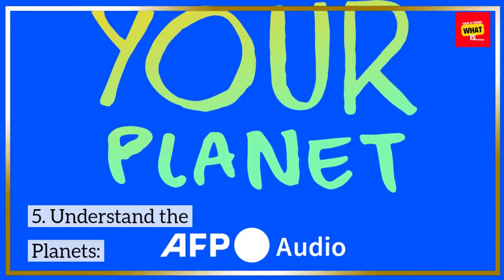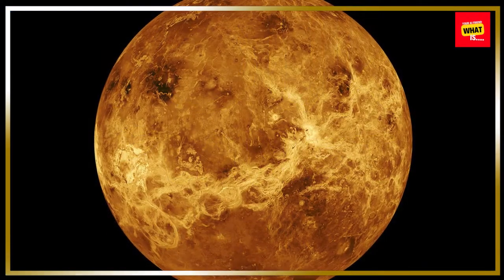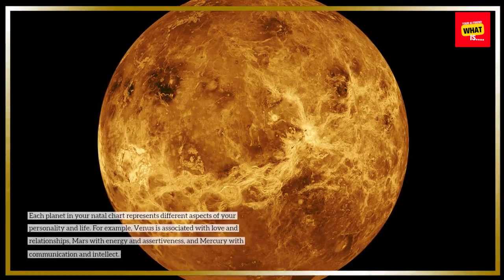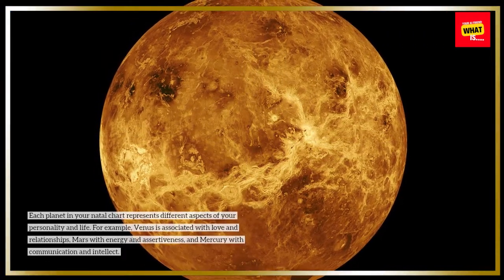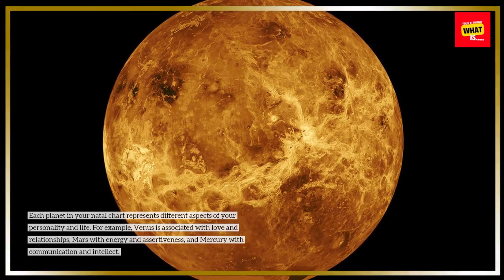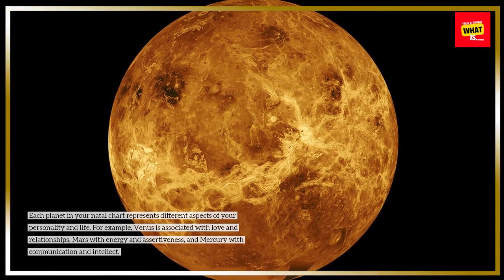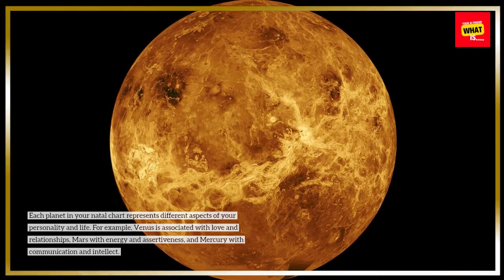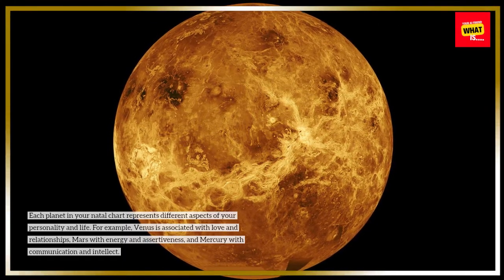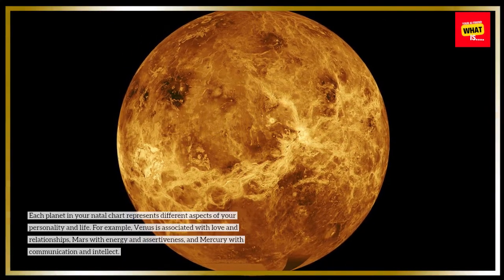Step 5: Understand the planets. Each planet in your natal chart represents different aspects of your personality and life. For example, Venus is associated with love and relationships, Mars with energy and assertiveness, and Mercury with communication and intellect.